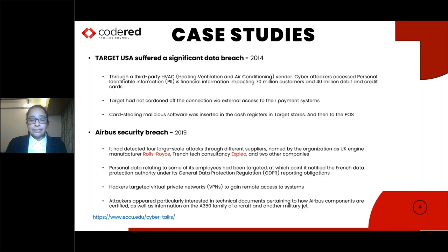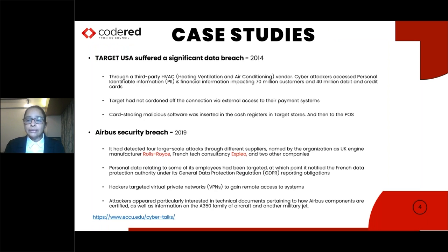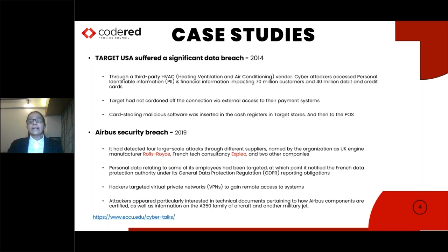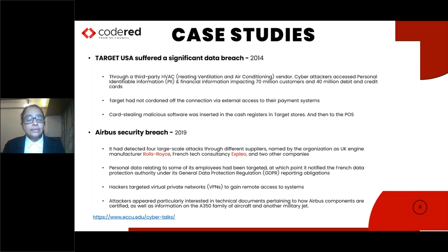The fact that a vendor's network can pose a cyber risk and lead to data leakage on a mammoth scale was seen way back in 2014. Target, a large retail chain, was hacked through a third-party heating, ventilation and air conditioning vendor. They had employed a Pennsylvania vendor who would remotely monitor their stores. Attackers accessed their network and leaked information of 70 million customers and 40 million debit and credit cards. Target had to pay a huge penalty and also spent on improving their cybersecurity network.